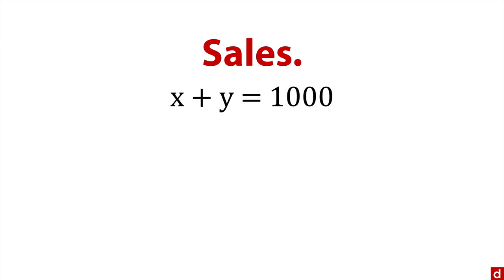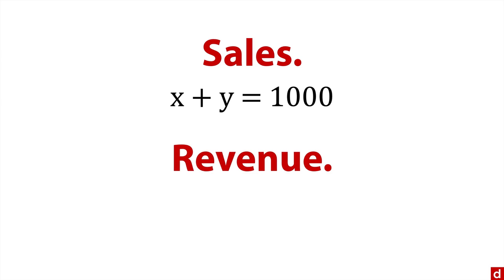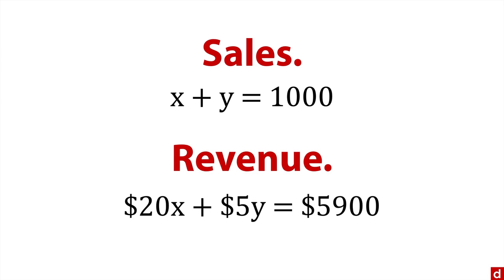We're going to start with this: we know that the two price points x and y add up to 1,000 total cases sold. And for revenue, we know that if you multiply a certain number times $20 and another number times $5, it all adds up to $5,900. Between the two of those, we can figure out the rest.